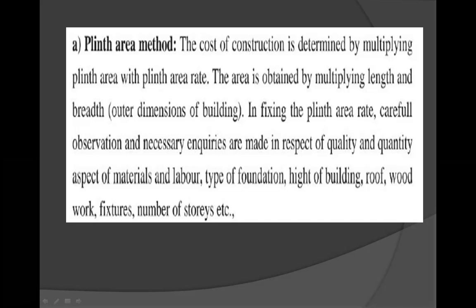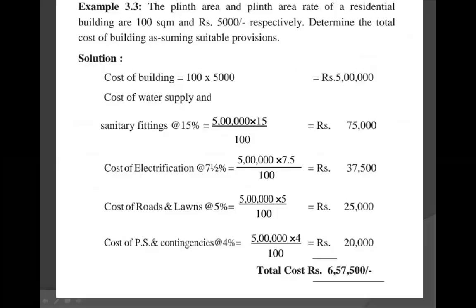Previously we solved two problems; now let's do the next Plinth Area Method problem. The plinth area and plinth area rate of a residential building are 100 square meters and 5,000 rupees respectively. Determine the total cost of the building assuming suitable provisions.